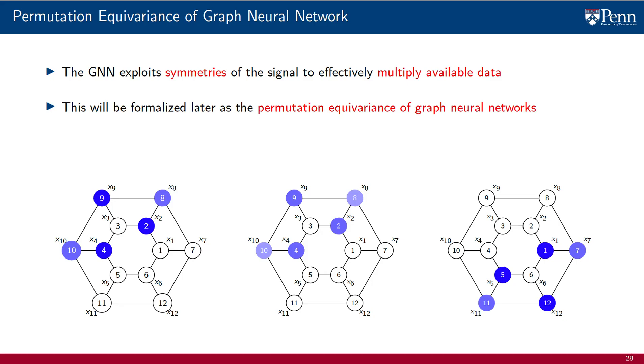Incidentally, a similar story holds for CNNs, which instead of permutation quasi-equivariance exploit translation quasi-equivariance.